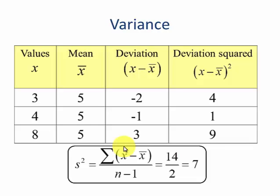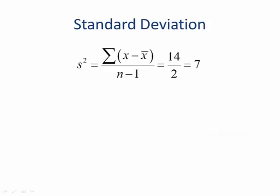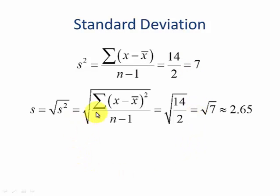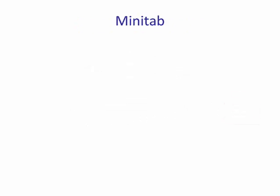If you remember our problem from variance, s squared was 7. So we want to compute the standard deviation of this. If we know the variance is 7, all we have to do is take the square root of the sample variance and we get the standard deviation, square root of 7, which is approximately 2.65. So what this means is that data set 3, 4, and 8, the average deviation away from the mean is about 2.65 units away.